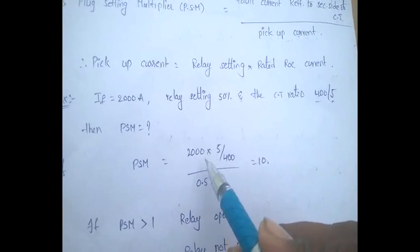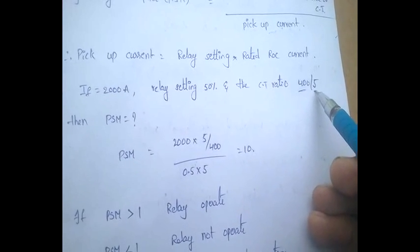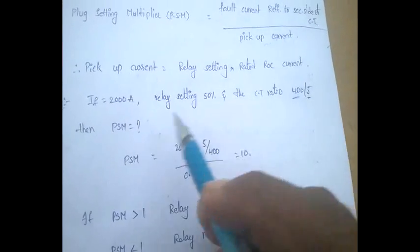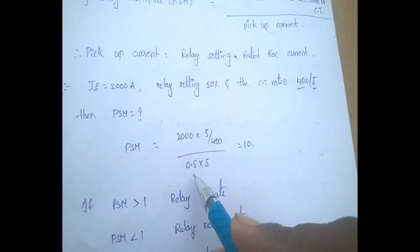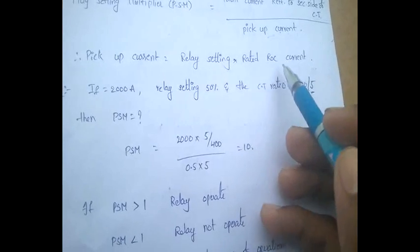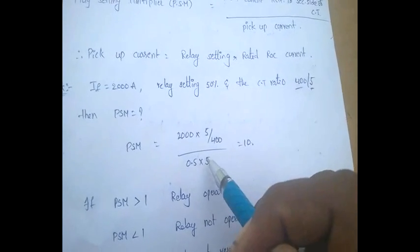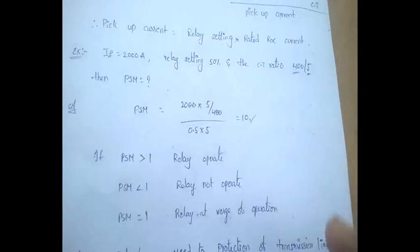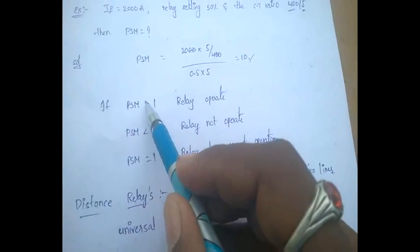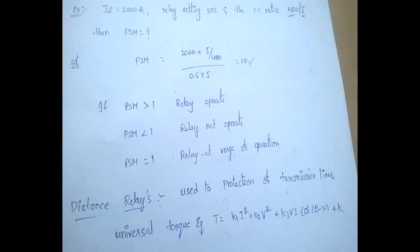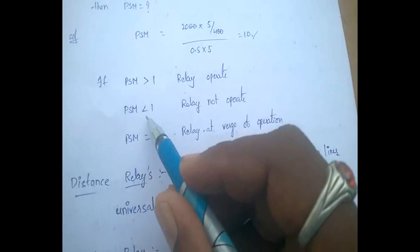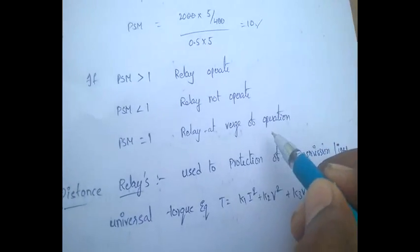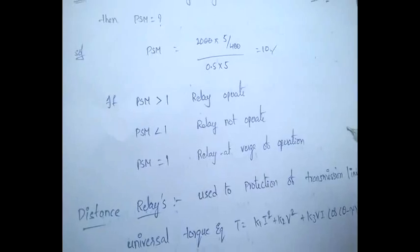To find PSM: fault current referred to secondary = 2000 × (5/400). Pickup current = 0.5 × 5. Simplifying gives PSM = 10. If PSM is greater than 1, the relay will operate. If PSM is less than 1, the relay will not operate. If PSM equals 1, the relay is at the verge of operation — it is in dilemma whether to operate or not.